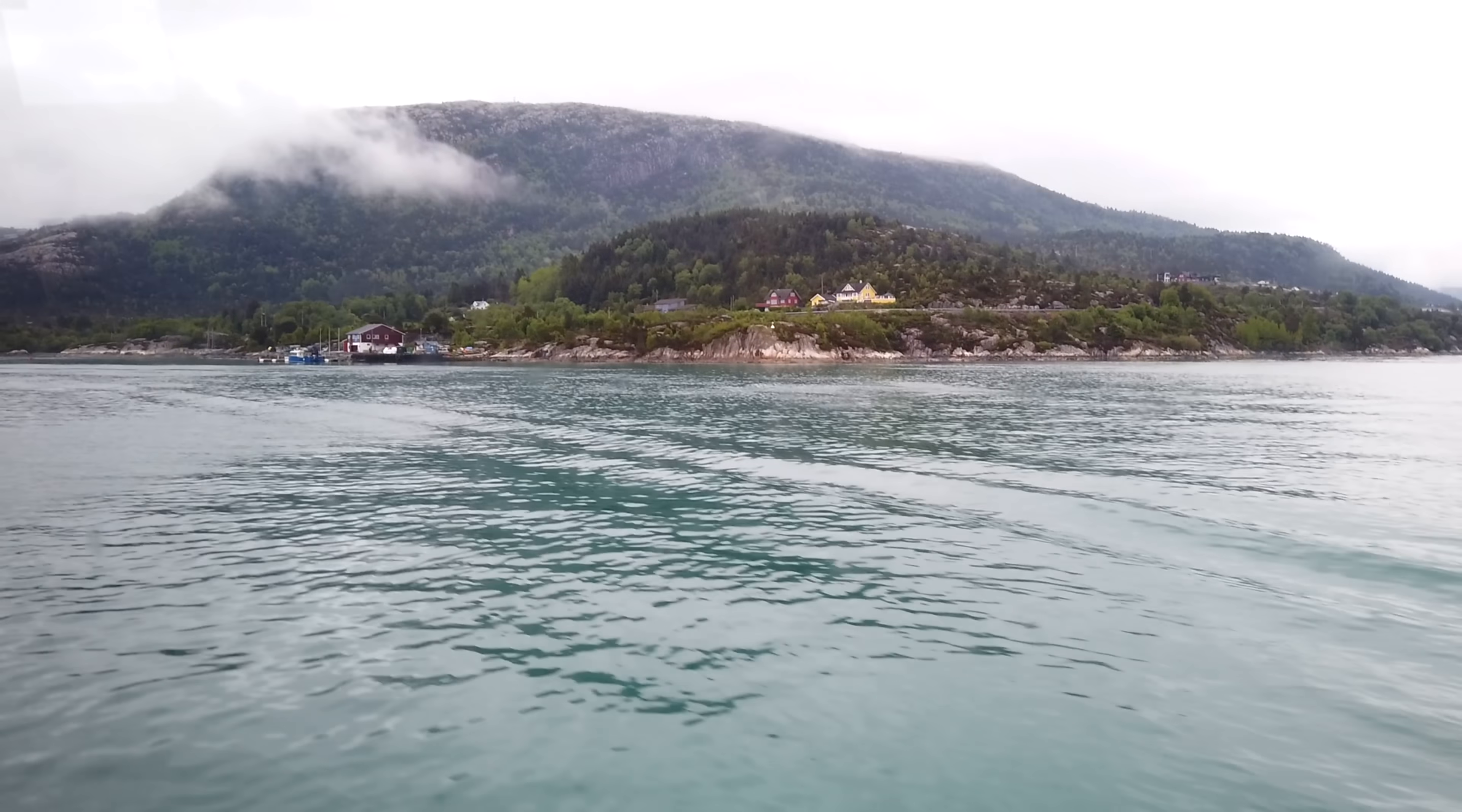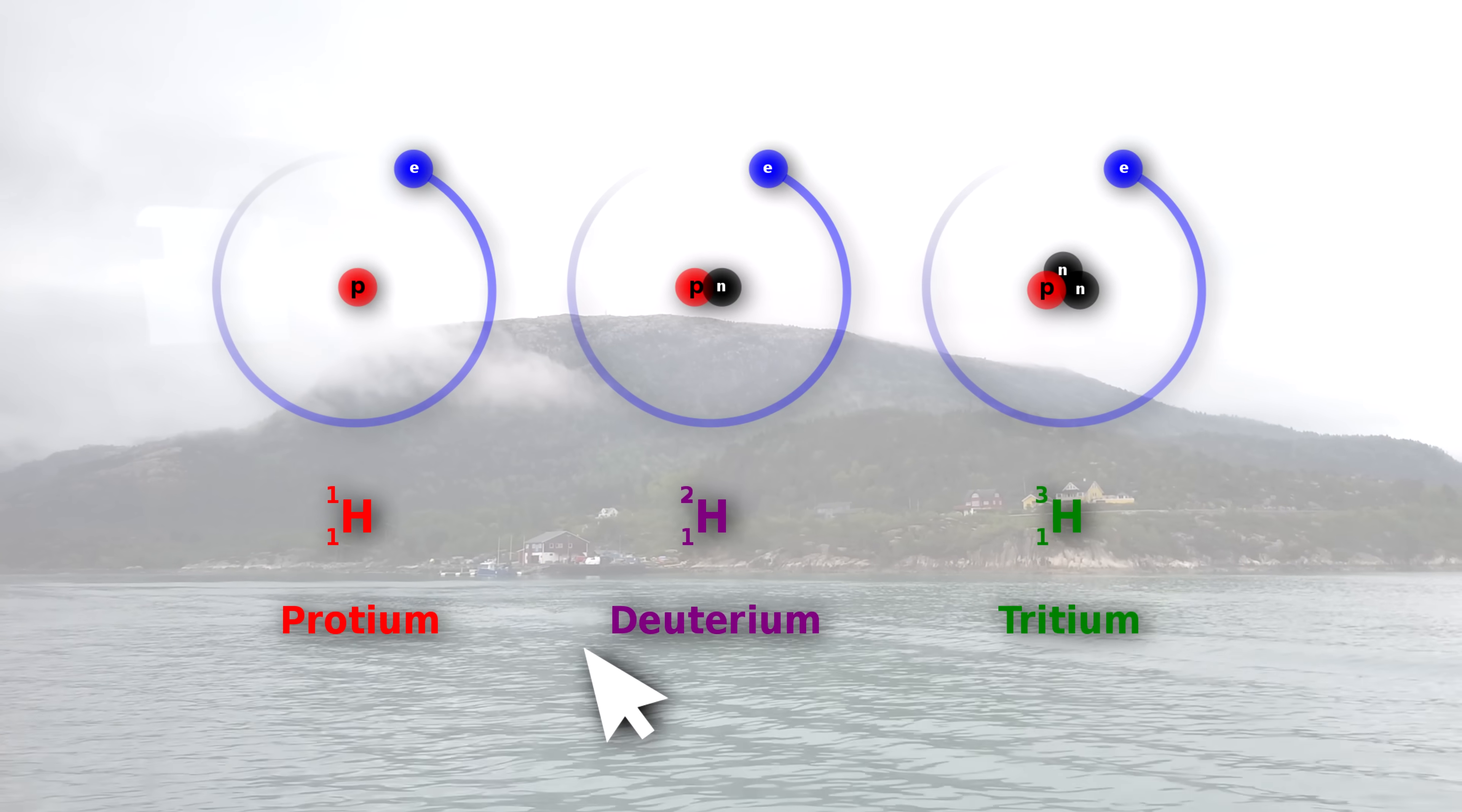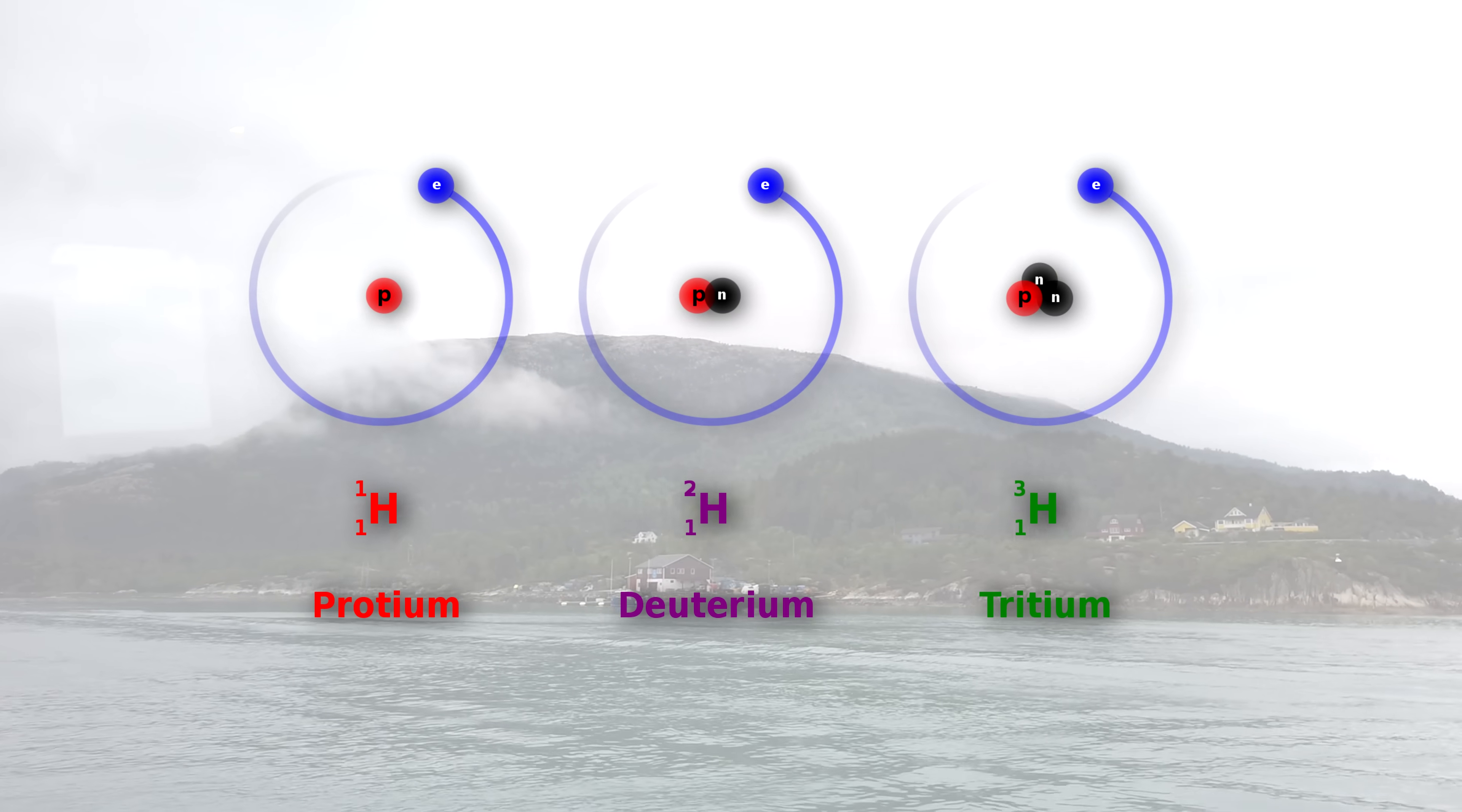In case you didn't know, water all over the world consists not of dihydrogen monoxide alone. This element has three isotopes: protium or as it is also known hydrogen, deuterium, and tritium.